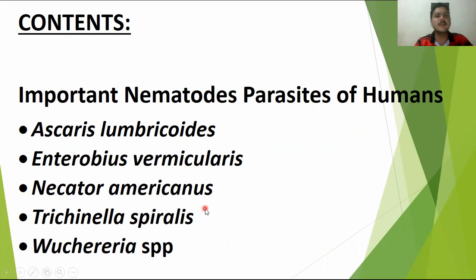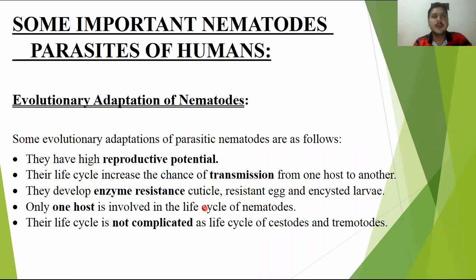In the next video, we will discuss Trichinella spiralis and Wuchereria species — some important nematode parasites of humans.